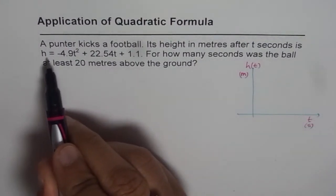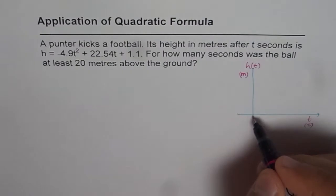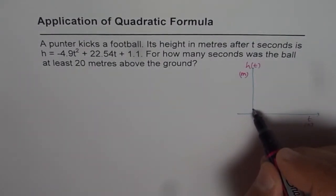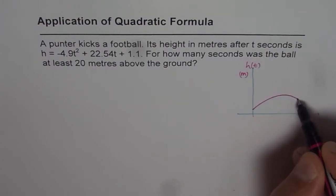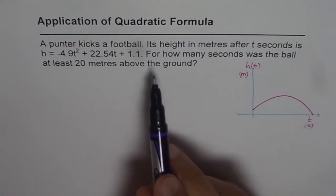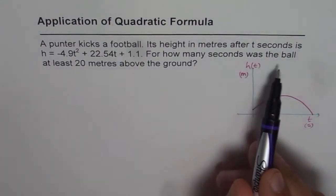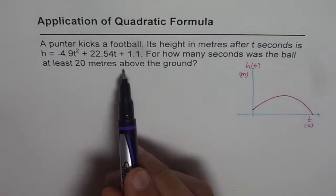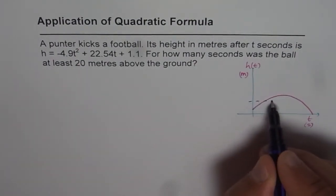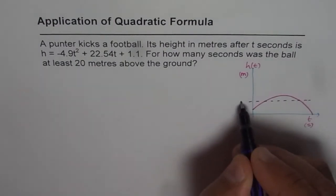Now, if t equals 0, we find that the height is 1.1, so it is not 0, starting from somewhere there. So the ball is following a trajectory which is kind of like this, a parabolic path. Now the question is, for how many seconds was the ball at least 20 meters above the ground? So let us say this height is 20 meters.